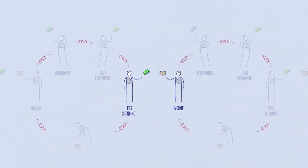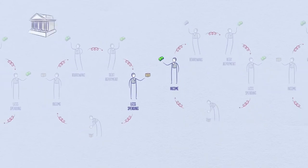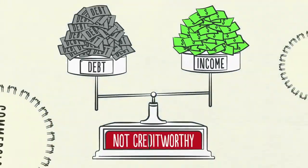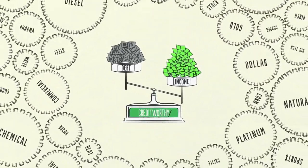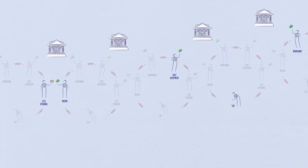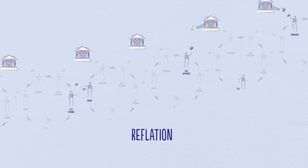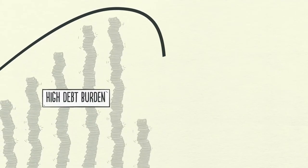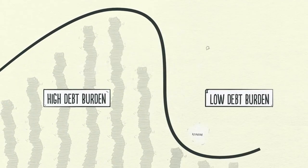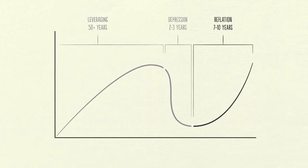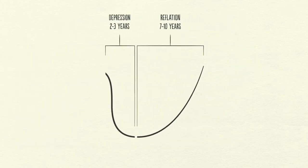When incomes begin to rise, borrowers begin to appear more creditworthy, and when borrowers appear more creditworthy, lenders begin to lend money again. Debt burdens finally begin to fall. Able to borrow money, people can spend more. Eventually, the economy begins to grow again, leading to the reflation phase of the long-term debt cycle. Though the deleveraging process can be horrible if handled badly, if handled well, it will eventually fix the problem. It takes roughly a decade or more for debt burdens to fall and economic activity to get back to normal — hence the term 'lost decade.'